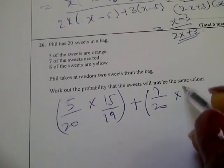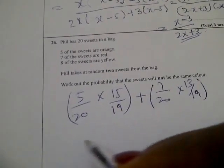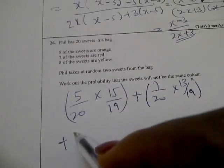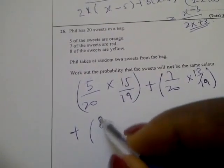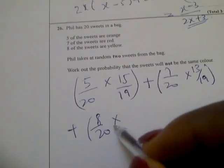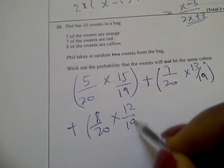Then plus yellow. Probability of taking yellow is 8 over 20 times probability of taking any other color that is not yellow, which is 12 over 19 since he didn't return it.